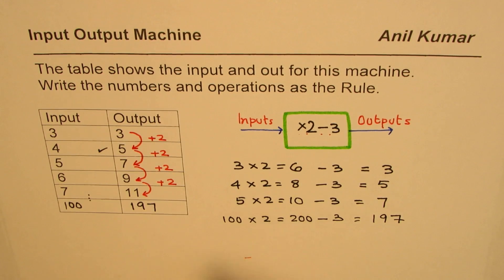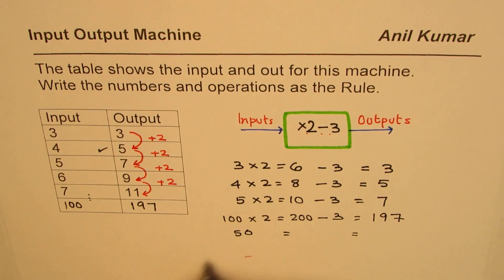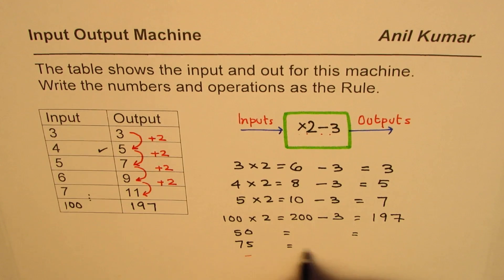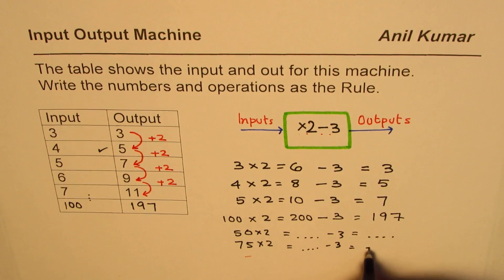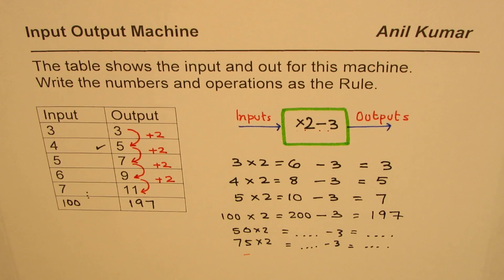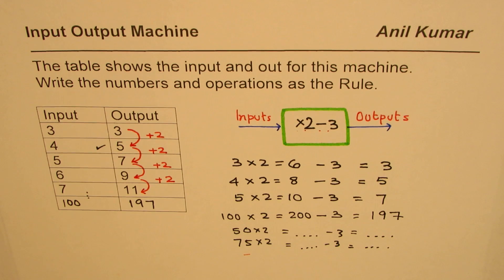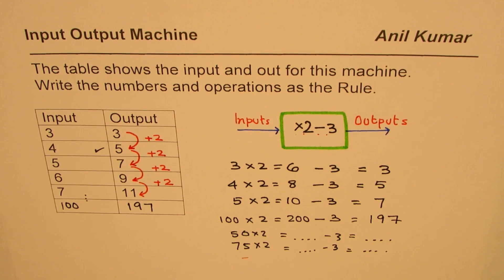So you do your calculations and find the output for 50 as the input and 75 as the input. So you'll do 50 times 2, 75 times 2, whatever you get here take away 3 and write down your answer. That is an exercise for you. But I hope with this video you learn how to find a rule which connects input to output. We'll take a few more examples on this. I'm Anil Kumar and you can always share and subscribe my videos. Thank you and all the best.